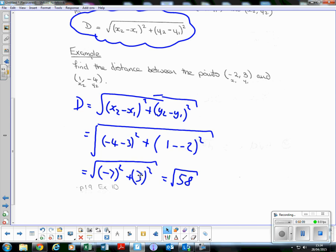(-7)² plus (3)² is 49 plus 9. So the distance is the square root of 58.